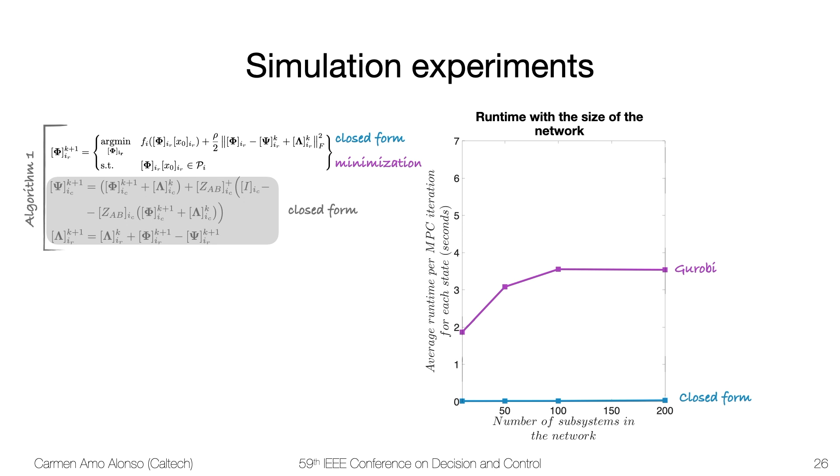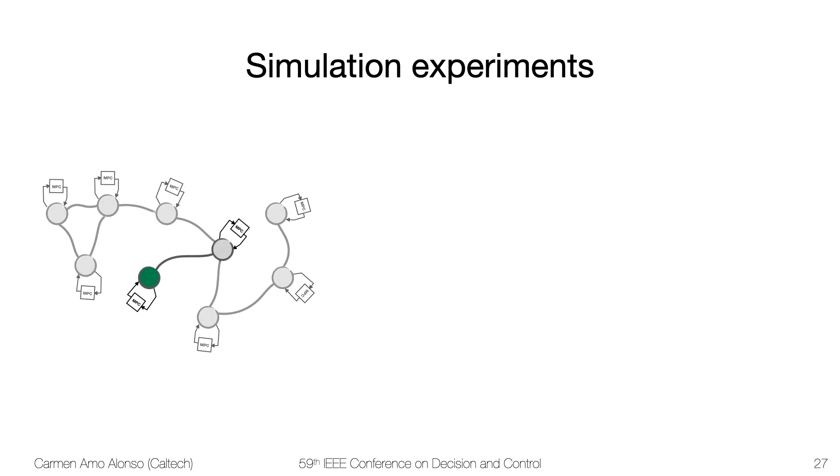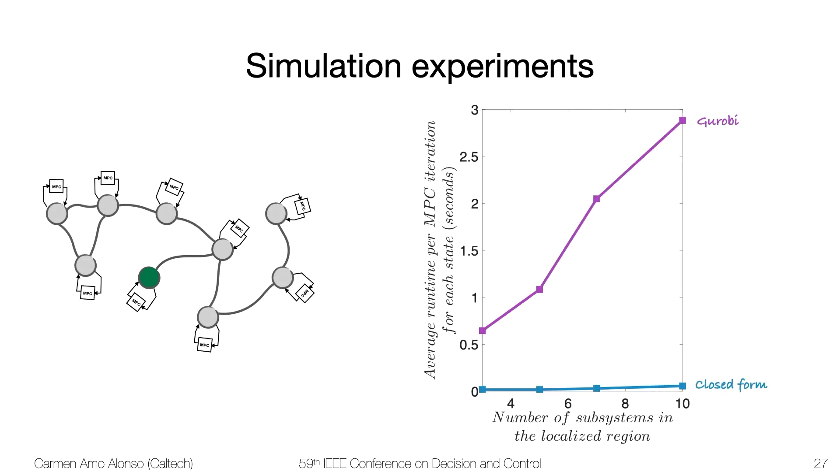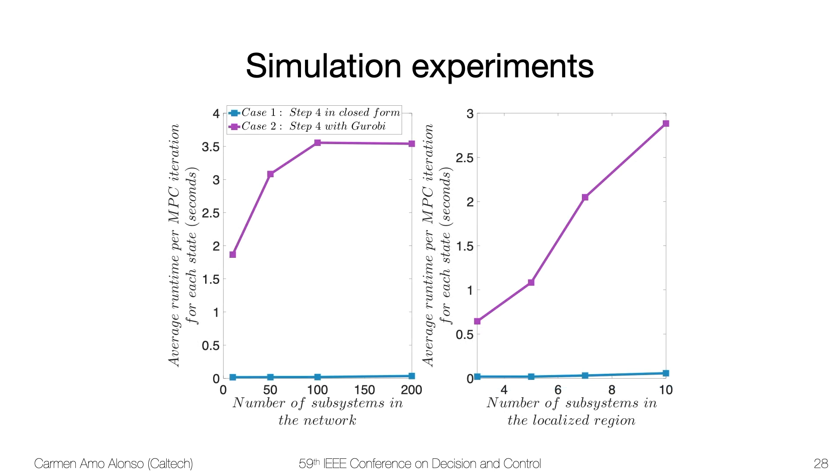We have investigated ways to compute solutions faster using explicit MPC, and that will be the topic of my next talk. We also saw that complexity scales badly with the size of the locality region. In summary, our approach does not scale with the size of the network, but it does scale with the size of the locality region, which is usually small in large scale networks. So our approach seems suitable for these kinds of networks.